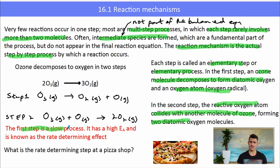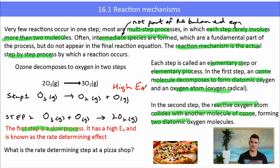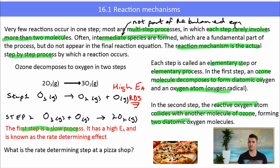The first step is a slow process, which means it has a high activation energy. Something with a high activation energy will always be the slowest step, and it is described as the rate determining step — the RDS.